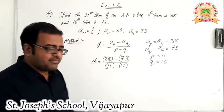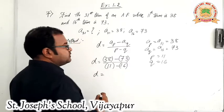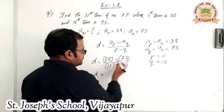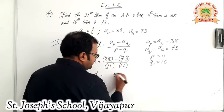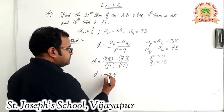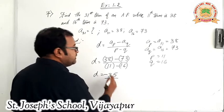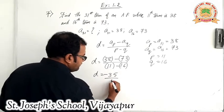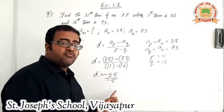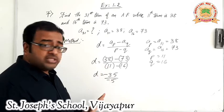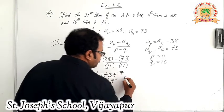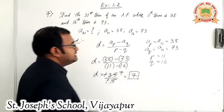The answer finally will be the same. D is equal to the subtraction: 38 minus 73 gives minus 35, and 11 minus 16 gives minus 5. Both are negative, so the negative signs cancel, giving 35 upon 5. So D is equal to 7.